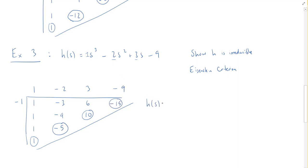And so this means that our h(s) can be rewritten as (s + 1)³ - 5(s + 1)² + 10(s + 1) - 15. Now, this constant coefficient is divisible by both 3 and 5, but 3 doesn't go into 10, so that's not going to work. But 5, aha, 5 goes into 15, it doesn't go in twice though.